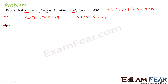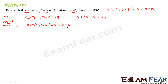Now let's assume — please note we are assuming — for n is equal to k, this statement is true. That is, 2 into 7 to the power k plus 3 into 5 to the power k minus 5 is equal to 24d. This is our assumption, statement 1.